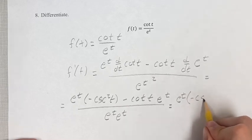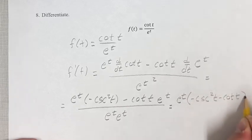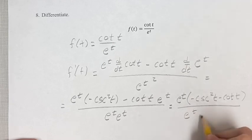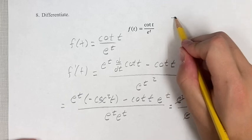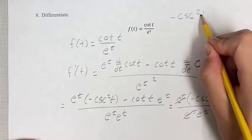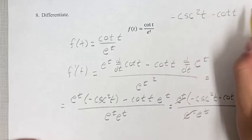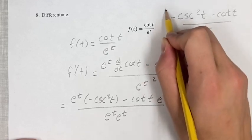That leaves us with negative cosecant squared t minus cotangent t over e to the t. These cancel out, and your final answer is negative cosecant squared t minus cotangent t over e to the t.